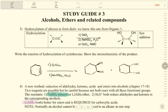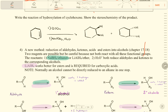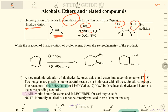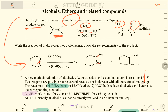Hydroxylation of alkenes to form diols — this is for organic chemistry 1. For hydroxylation of an alkene chain, use OsO4/NHSO3 or OsO4/NMO, and syn addition occurs. Both OH groups add to form a diol. To write the reaction of hydroxylation of cyclohexene and show stereochemistry: the double bond breaks and two OH groups form. Remember two stereochemistry outcomes — cis and cis again — both OH groups are on the same side.